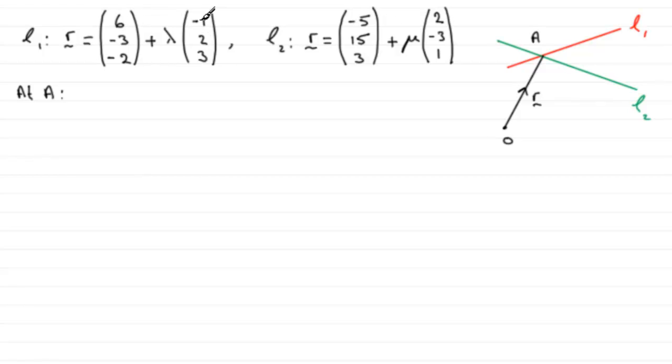And we can group up the components. We can say we've got 6 minus lambda here, minus 1 lambda. So if we do that, we've got 6 minus lambda. Then here we've got minus 3 plus 2 lambda. And on the bottom here, the K component, we've got minus 2 plus 3 lambda.